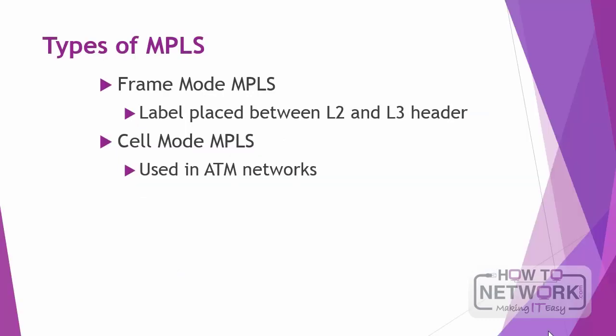MPLS comes in the following two flavors: frame mode MPLS and cell mode MPLS. Frame mode MPLS is the most popular type; in this scenario, the label is placed between the Layer 2 header and the Layer 3 header, which is why MPLS is often considered a Layer 2.5 technology. Cell mode MPLS is used in ATM networks and uses fields in the ATM header as the label.